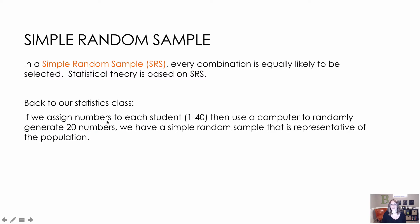Let's talk about the ways we can collect and gather data. The simple random sample, or SRS, is the easiest and most common. Every single individual in the population has an equal chance of being selected. Looking at our 40 stat students example, I would give everybody a number and choose 20 random numbers from a random number table or using technology. Those 20 people should be representative of the population because they were randomly selected from those 40 students.